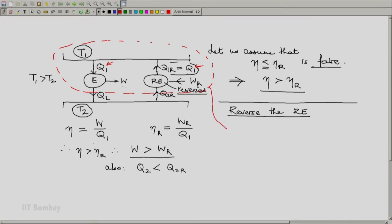Now, what is this? Notice that this is engine plus reversible engine reversed plus the reservoir at T1. What are its interactions? First, it produces work which is a combination of this work done by the engine and the work absorbed WR by the reservoir. So it produces work which is equal to W minus WR.